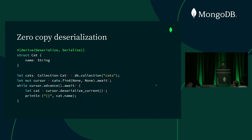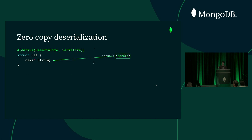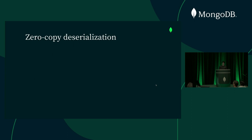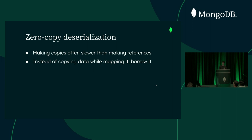Let's take a look at an example of this in the Rust driver. This is the previous example of us going over the collection and printing all the names of the cats. In each iteration of the loop, we're copying the name string from the input document into our struct. If we have a lot of cats or cats with really big names, these copies can slow down our application. But if we look at the binary representation of the input document, the string is actually stored as UTF-8, which is the same way Rust stores strings in memory. We can actually use this to speed up deserialization — and that's where zero-copy deserialization comes in. Instead of copying it, we actually borrow it during deserialization from the input, and the BorrowChecker helps make sure this is safe. And the best thing of all: it's supported out of the box by Serde.